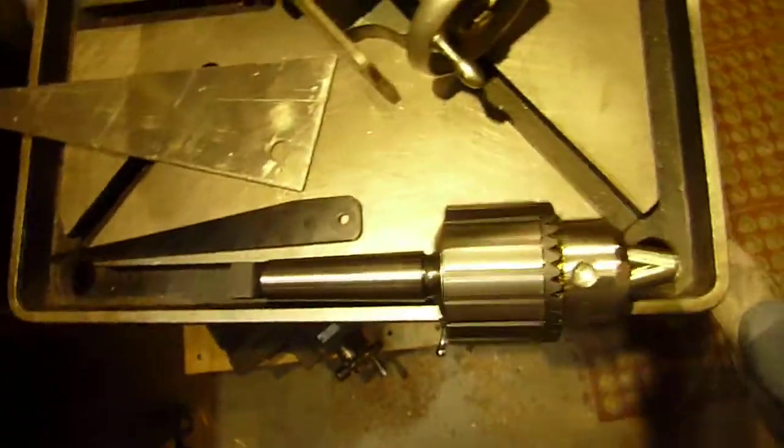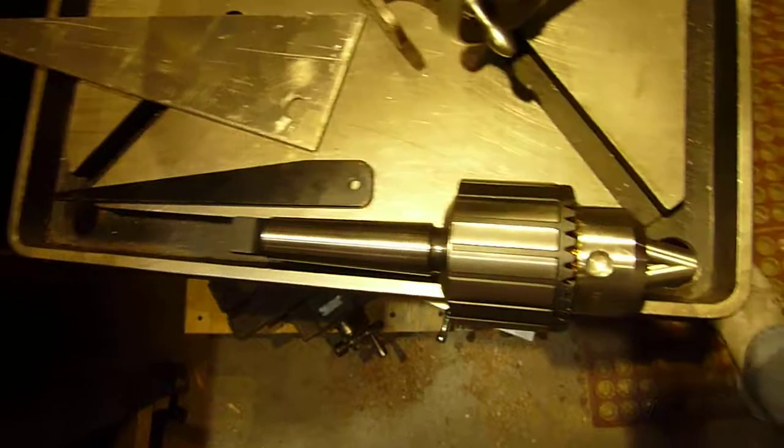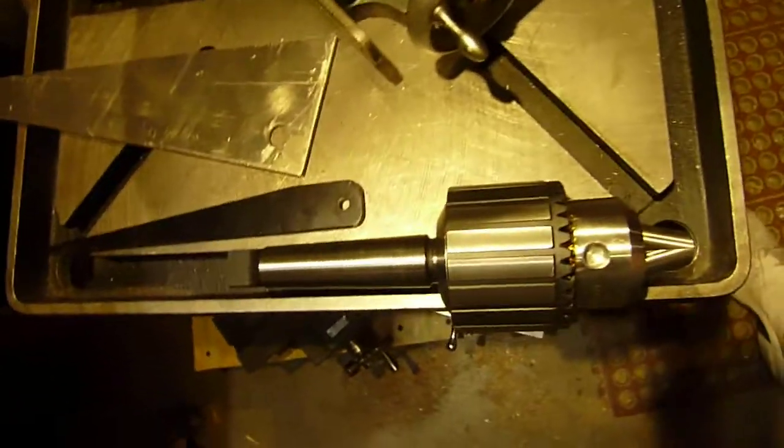So what I did is, with the drill chuck, just put it up in there and give it a couple of whacks with a hammer. I don't want to hit it directly, so I've been hitting it through the aluminum, but just a couple of decent whacks with a hammer.